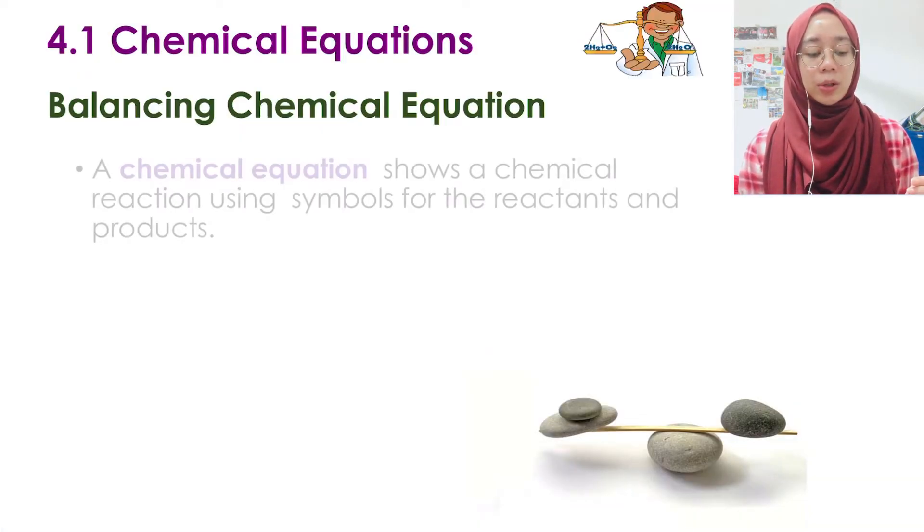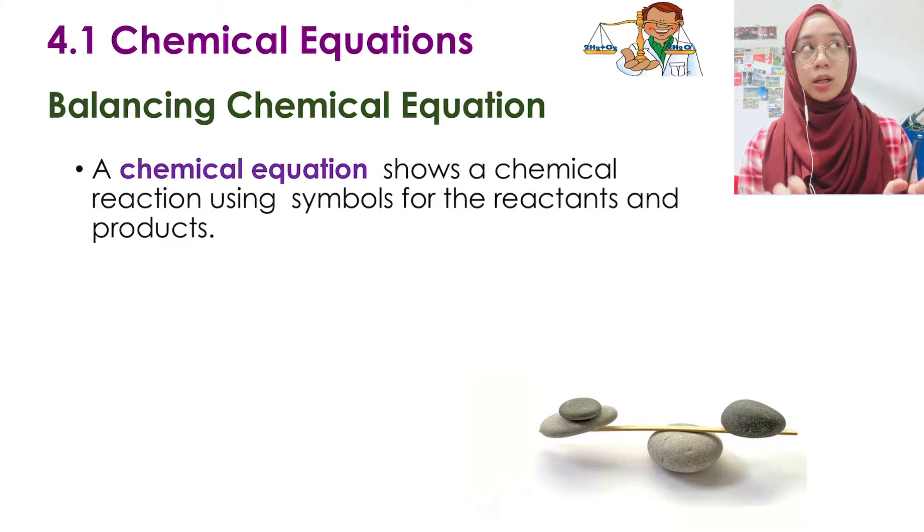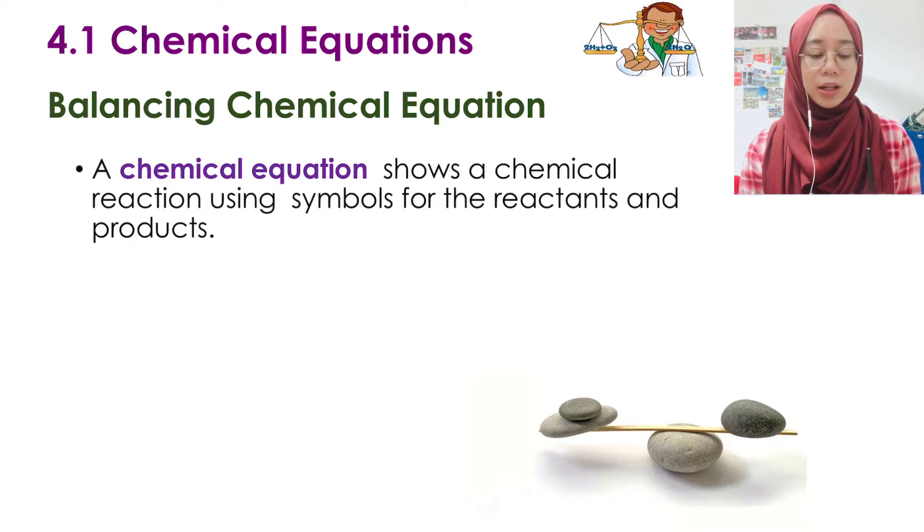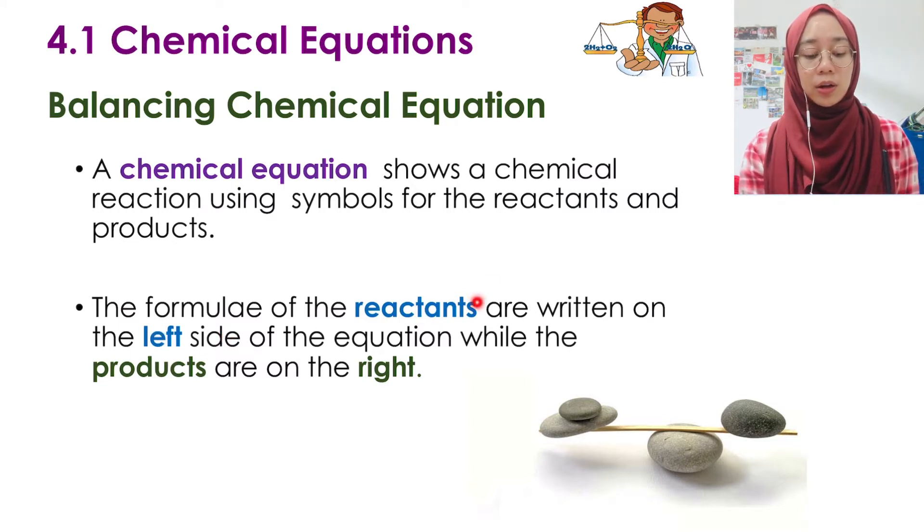So balancing chemical equation. A chemical equation shows a chemical reaction using symbols for the reactants and also product. So we don't use the name. Like if sodium chloride, we will write NaCl. We don't write sodium chloride in the equation. We will use the symbol. So the formula of the reactants are written on the left. The one on the left side of the chemical equation, we call it as reactants. Meanwhile, on the right side of the equation is what we call as the product.